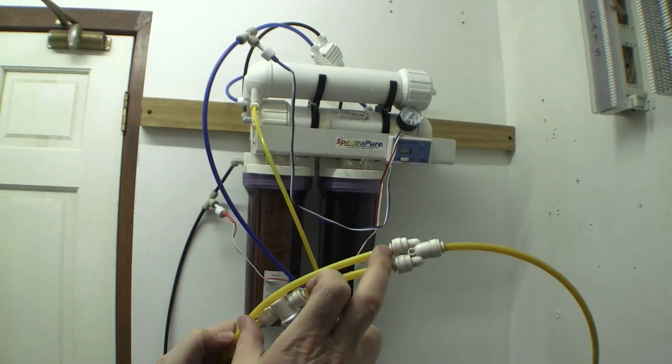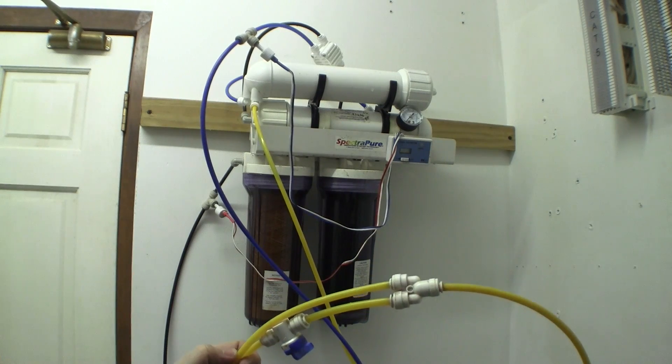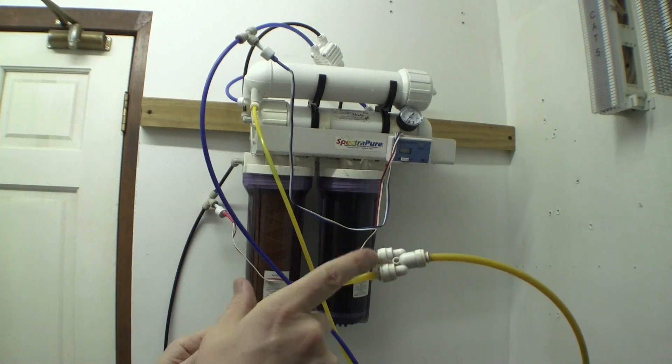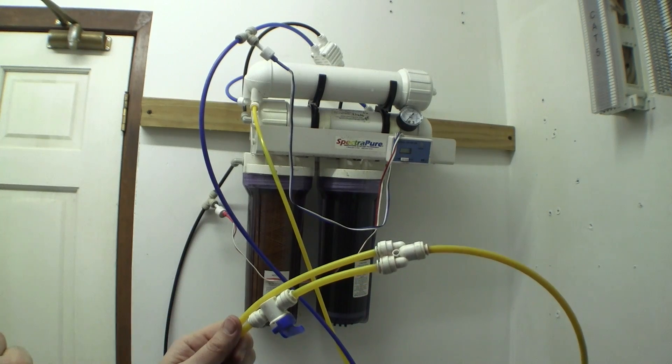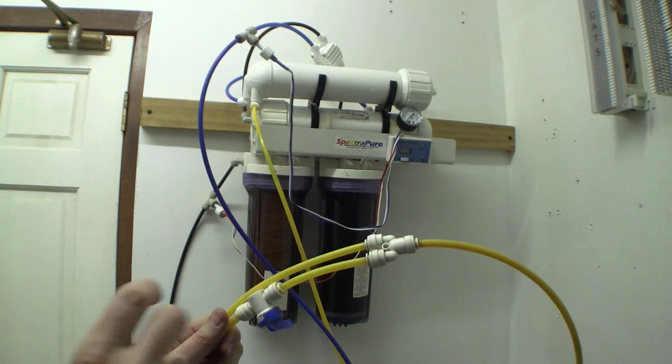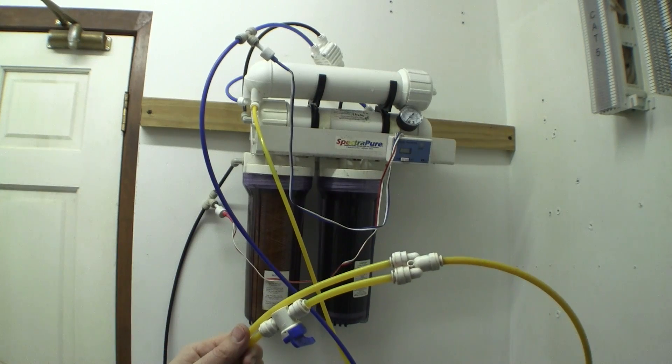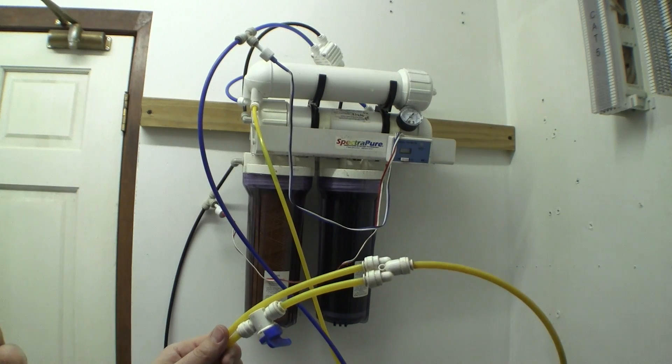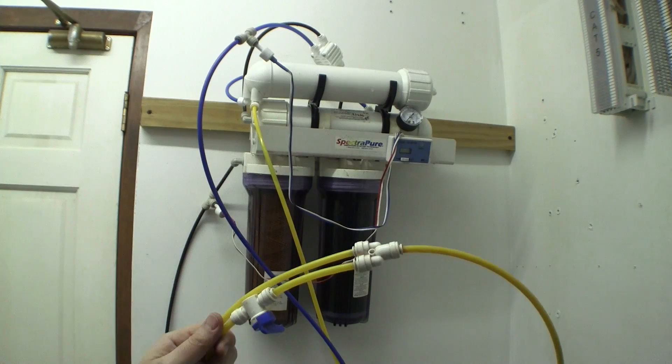You saw that mine was pretty short and that's part of the problem. So I'm actually going to be replacing that restrictor capillary tube and show you how to adjust it so you get the right ratio between wastewater and RO water.